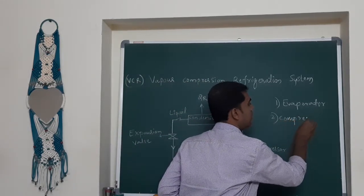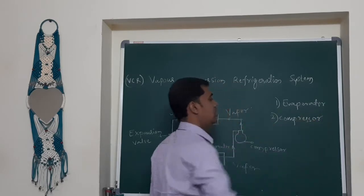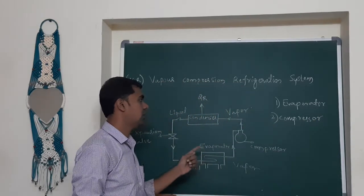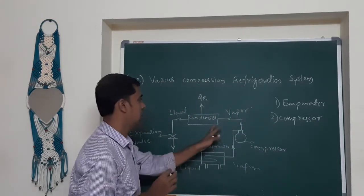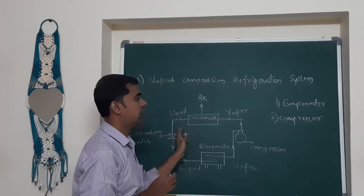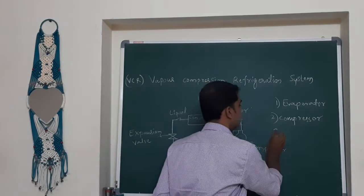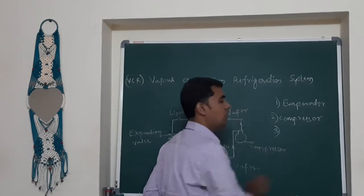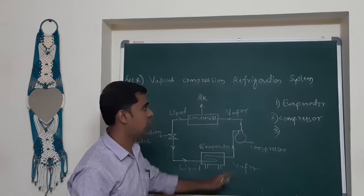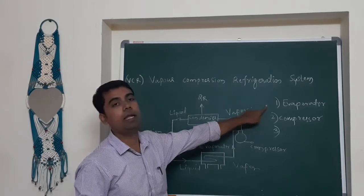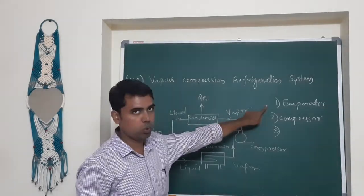The second part is the compressor, which is used to increase the pressure of the vapor. The third part is the condenser. The evaporator is inside the space to be cooled, while the condenser is located in the surrounding area outside.